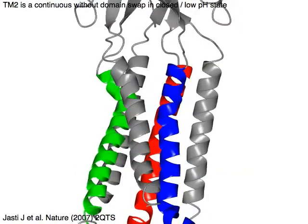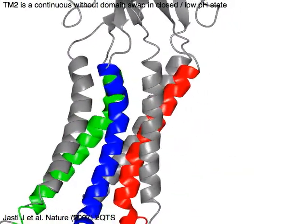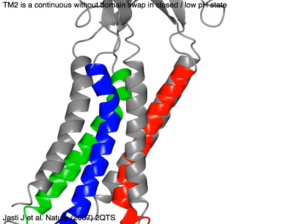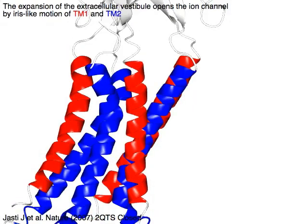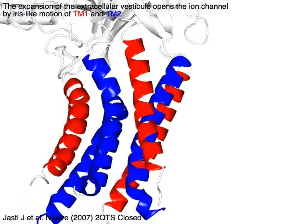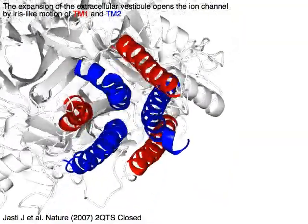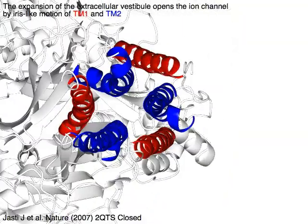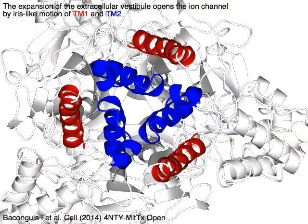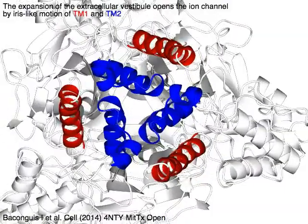TM2 is continuous without domain swap in the closed or low pH state. The expansion of the extracellular vestibule opens the ion channel by iris-like motion of TM1 in red and TM2 in blue.